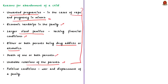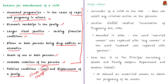There are also political factors that force child abandonment, including war, climate change-based displacement and other factors. These are all some of the major reasons for abandonment of a child. Now let us see the steps taken by the government to avoid child abandonment in India.